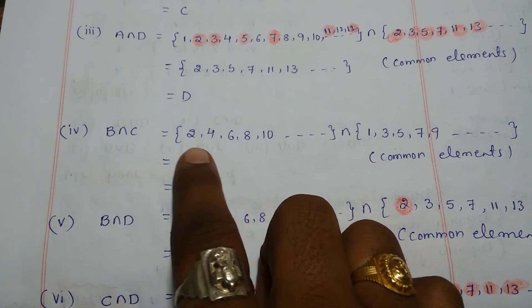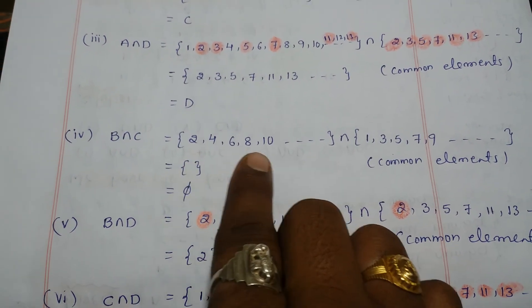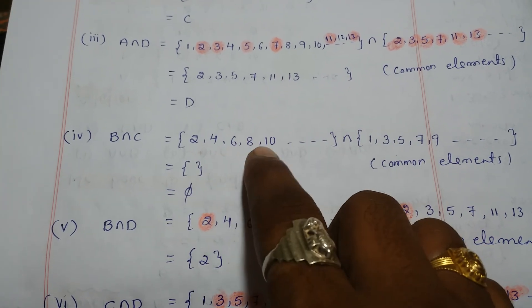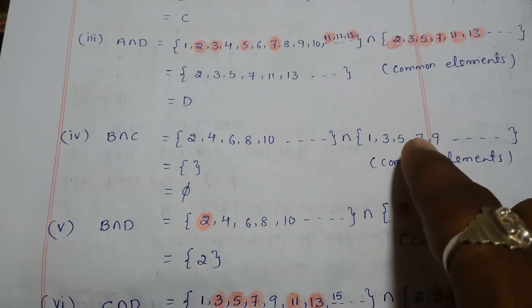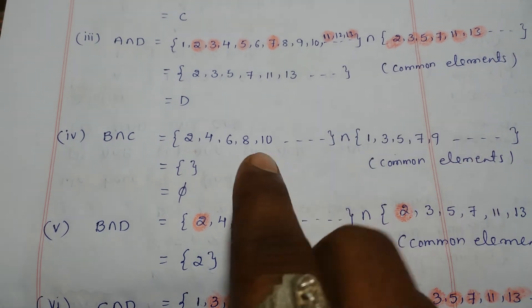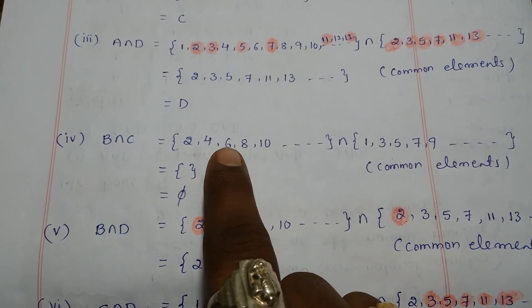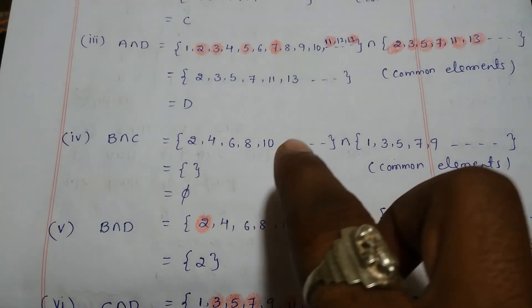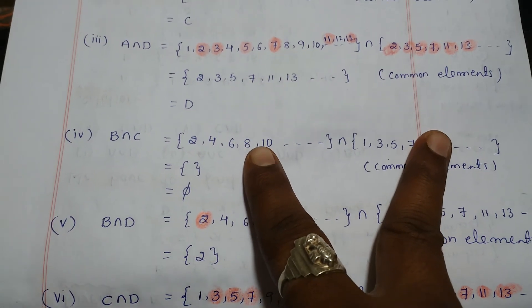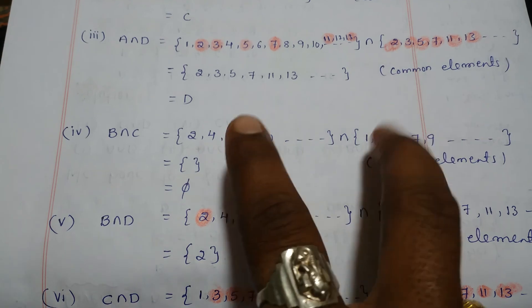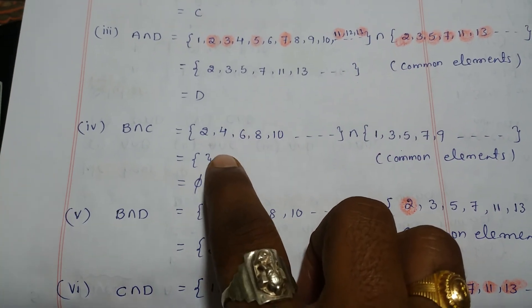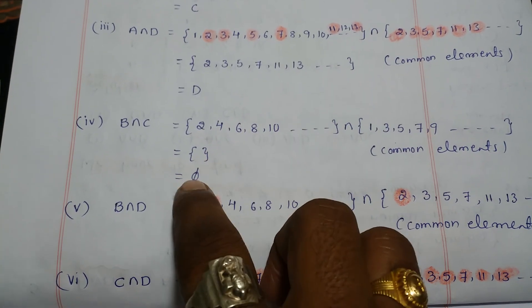Next, B intersection C. B is the set of even numbers and C is the set of odd numbers. There are no common elements between the set of even numbers and odd numbers, so B intersection C is the empty set — the null set.